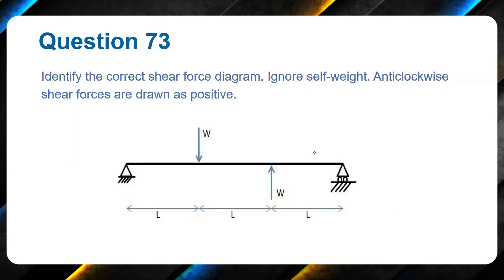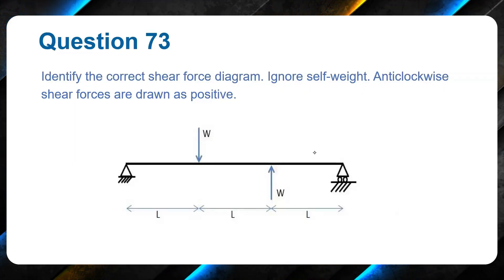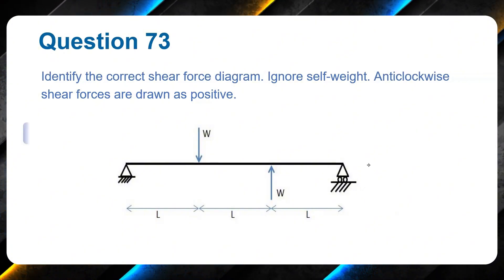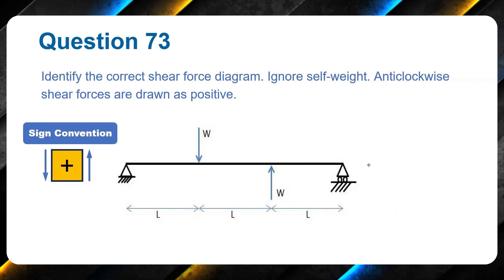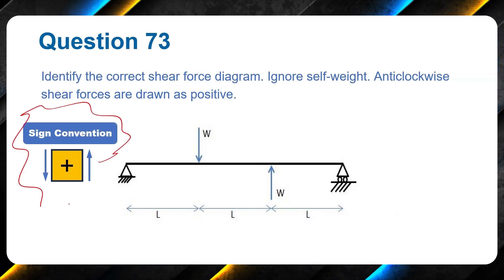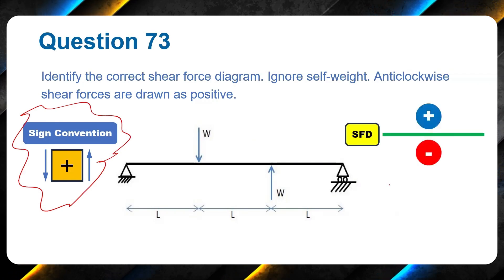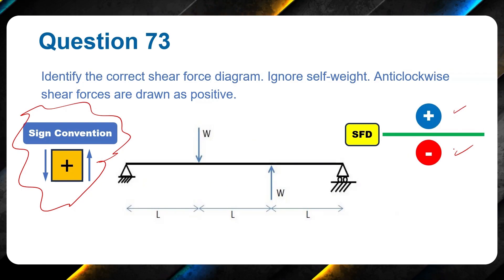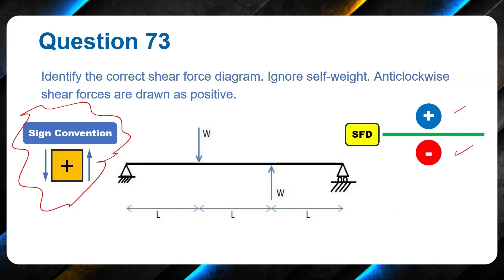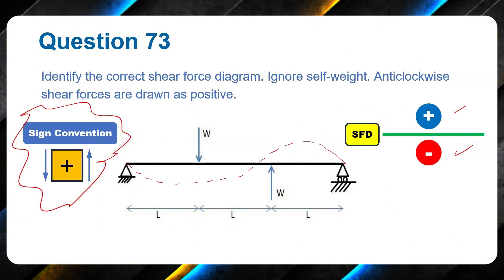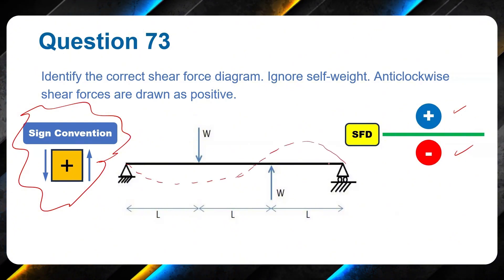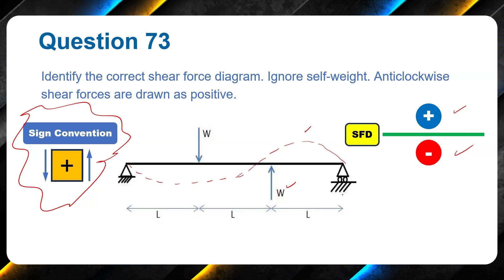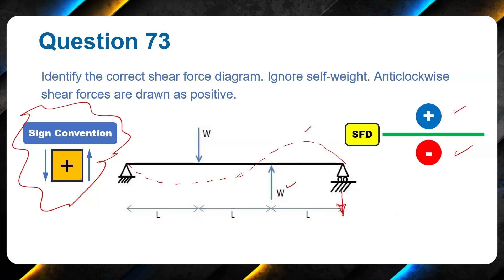In this question, we have to identify the correct shear force diagram. We have to ignore the self-weight and anticlockwise shear forces are drawn as positive. This is the sign convention that will be used here. Positive forces are drawn upwards, negative forces are drawn downwards. Immediately looking at this, I will draw the deflected shape. Deflected shape will look like this. When you have deflected shape like this, these two forces, they cancel each other. Here, this is in hogging region. It means that the reaction here should be downwards.